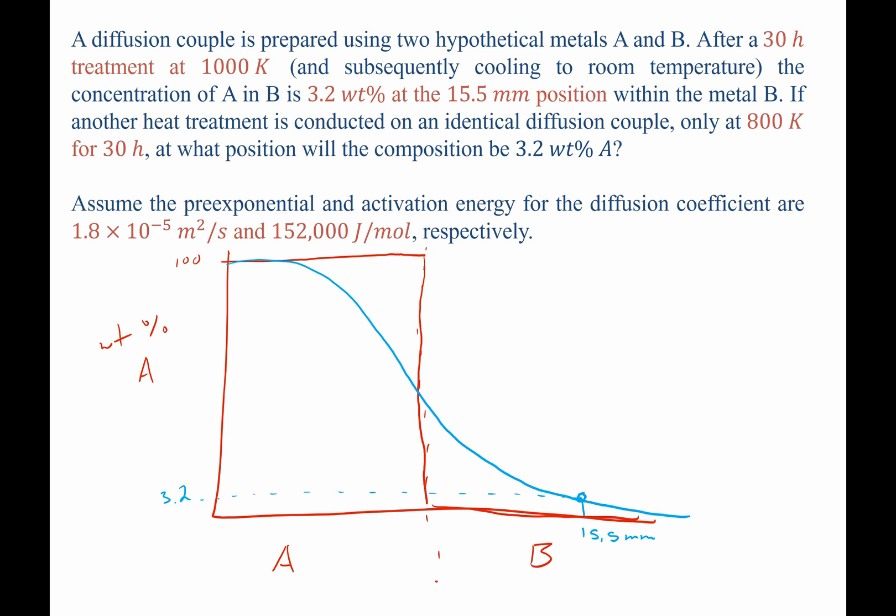Now, when we heat treat it a second time, it's happening at a lower temperature. Therefore, we expect a steeper diffusion curve. So the position at which we reach that same concentration should be less than 15.5 millimeters.